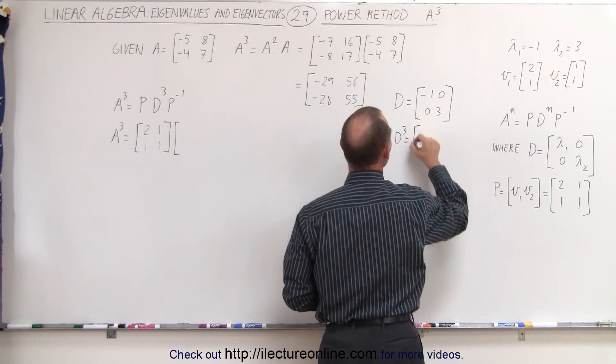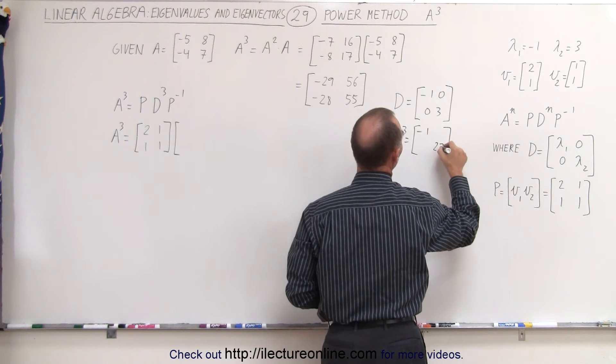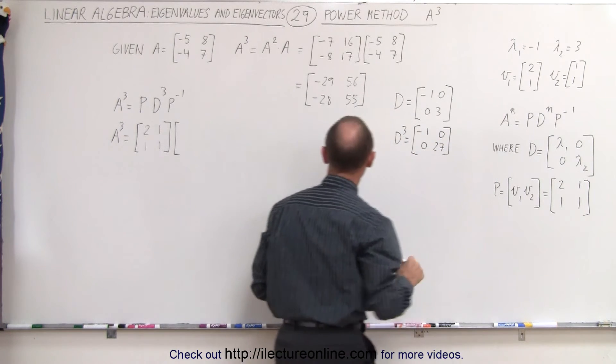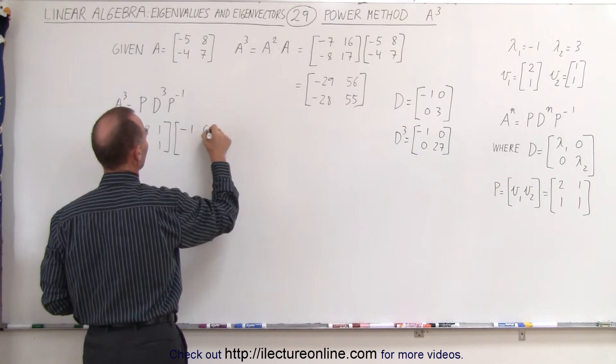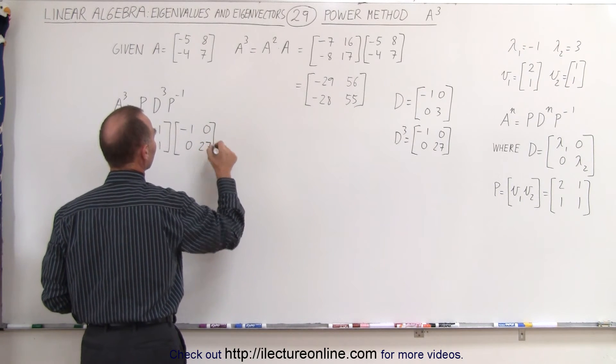And then of course, D cubed is simply each of the elements cubed, that gives you minus 1, 27, 0, and 0, which goes over here, minus 1, 0, 0, 27. Missing the 7 here.